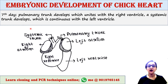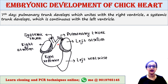At about the seventh day, the pulmonary trunk develops, which unites with the right ventricle. The systemic trunk also develops, which is continuous with the left ventricle.